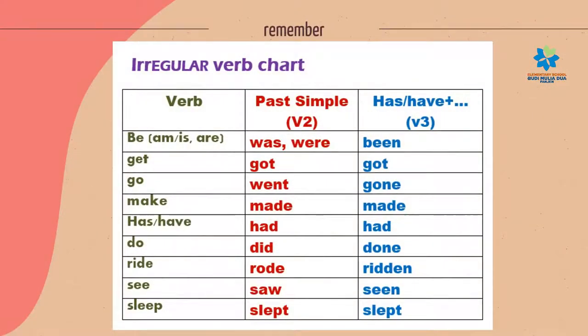For the second table, we have irregular verbs. We have nine words for the irregular verbs. Try to memorize the verbs on the third column.